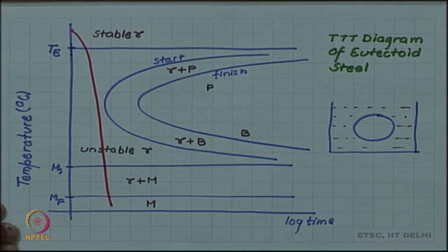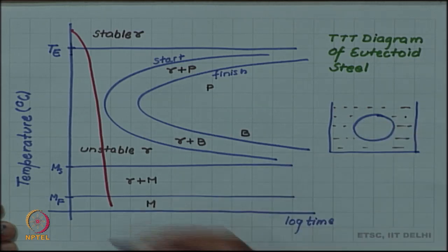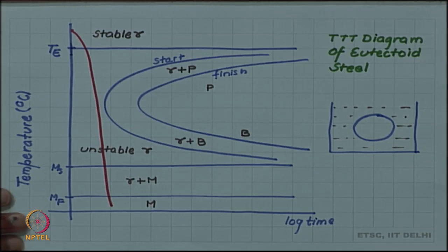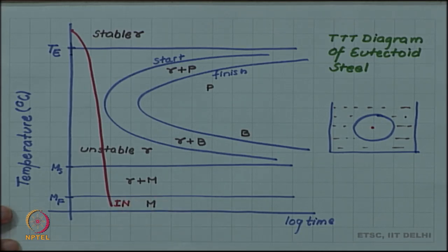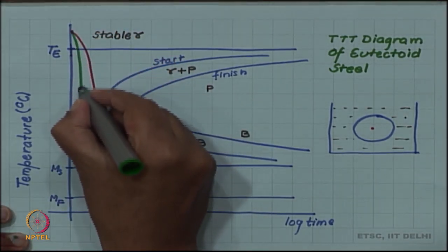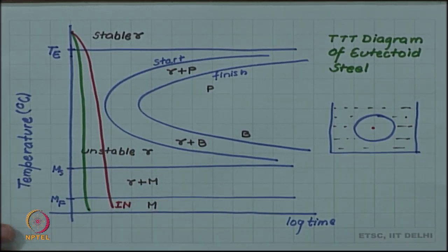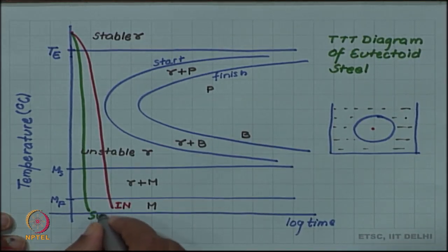So this is the object and the surface will cool faster than inside. Let us say that this red curve is showing the cooling curve of inside and let me draw another curve with a faster cooling rate which is indicating the surface, the cooling rate at surface.